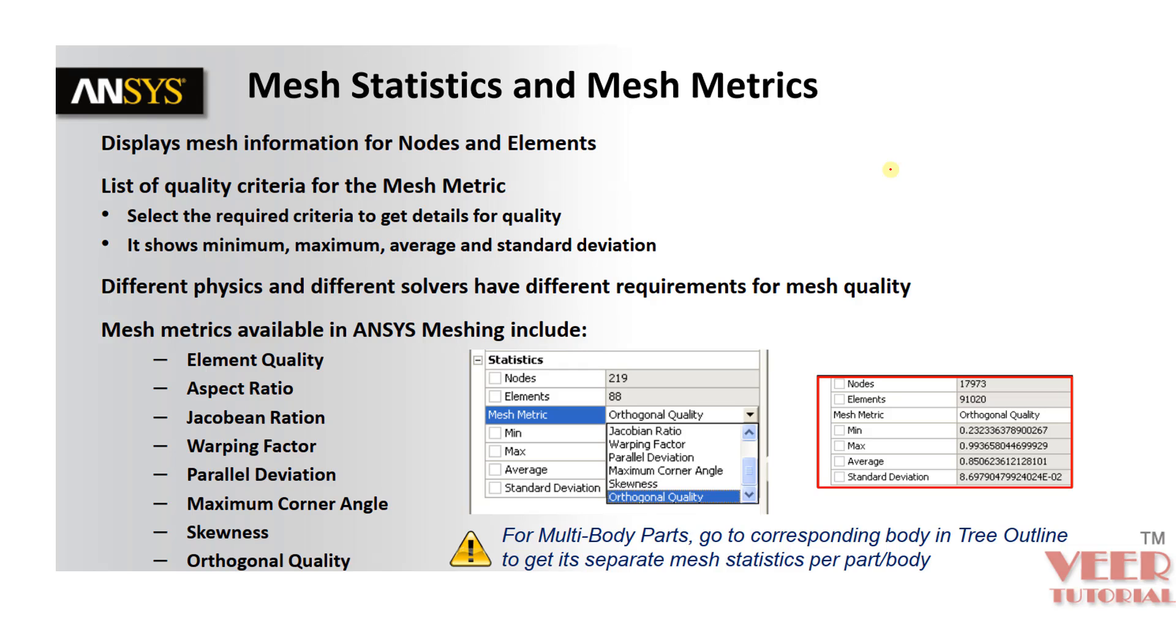So basically, in order to generate a good quality of mesh and to have a better and accurate result, we need to have a good element quality criterion. If our element is highly skewed and the element is very tilted or very skewed, it is not going to provide a good result.